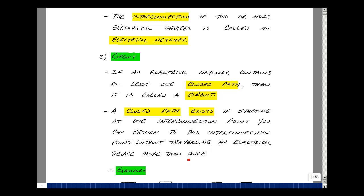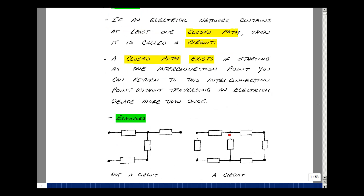Let me explain what that means with an example. Suppose I started at this electrical interconnection point. I can come back to it by passing through these four elements, but not going through them more than once. I could also come back through it this way.